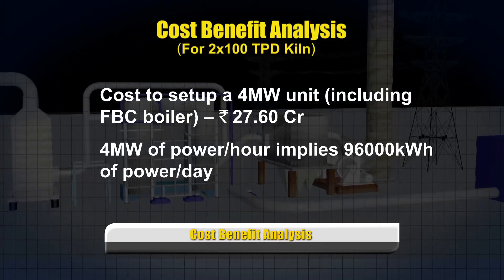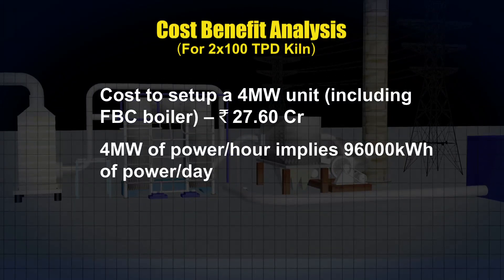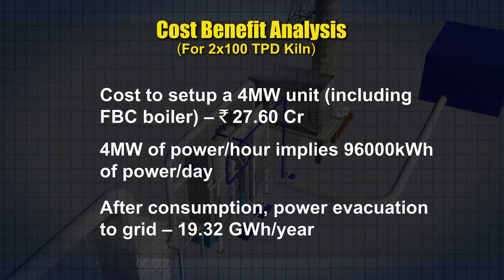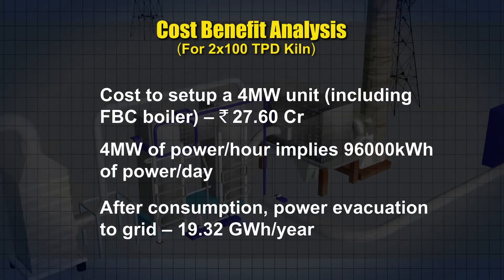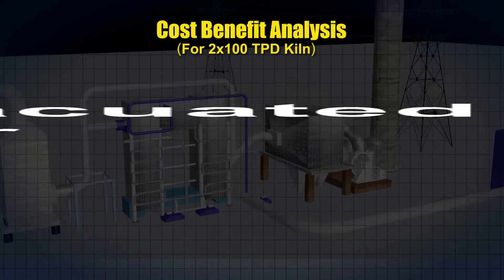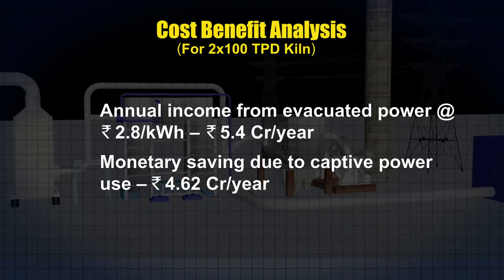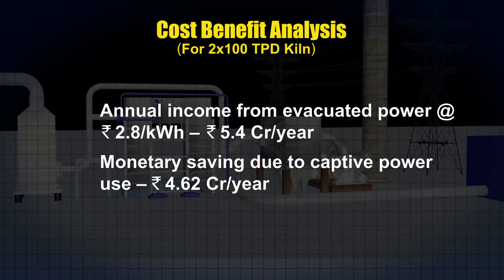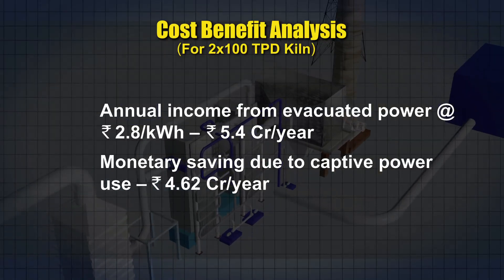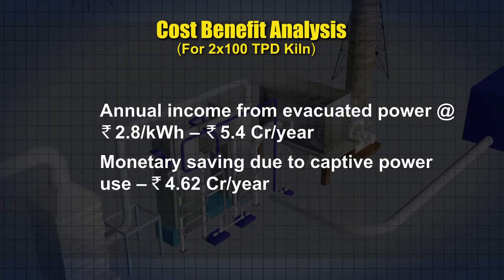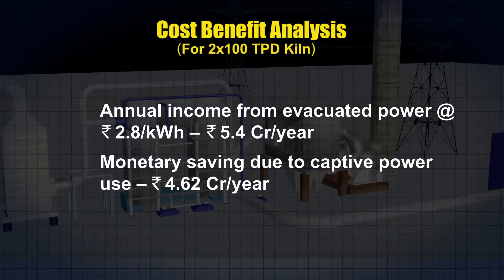4 megawatts of power per hour implies 96,000 kilowatts of power per day. After consumption, power evacuation to grid is 19.32 gigawatt hours per year. Annual income from evacuated power at the rate of 2.8 rupees per kilowatt hour is 5.4 crore rupees per year, and monetary saving due to captive power use is 4.62 crore rupees per year.